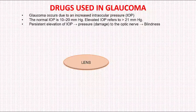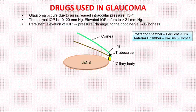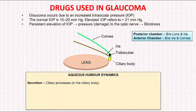We have the lens depicted in pink, the iris in brown, the cornea in green, the yellow refers to the ciliary body, and the black refers to the trabeculi. The space between the iris and the lens is called the posterior chamber, and the space between the iris and the cornea is called the anterior chamber. The aqueous humor is continuously secreted by ciliary processes in the ciliary body.